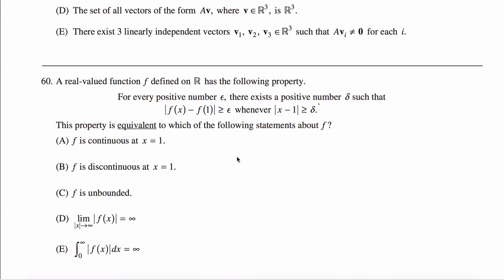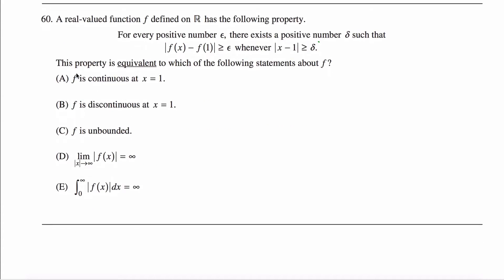Here are solutions to problem 60 off the math subject GRE practice test. What we're told is we have a real-valued function defined on the reals with the following property. What we're asked is which of these statements is this property equivalent to? Four of these five statements are not equivalent to this property. We'll wrap our head around what this property means.